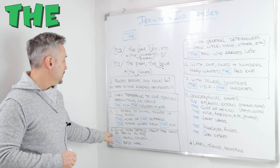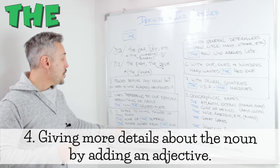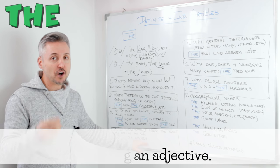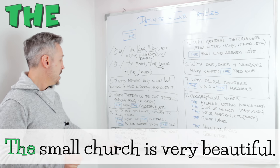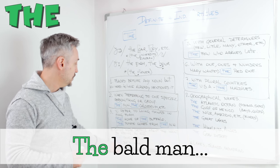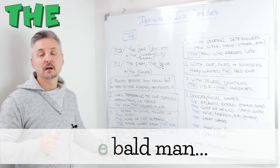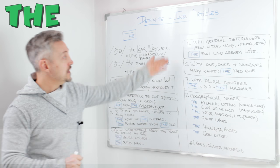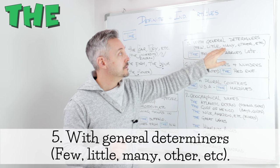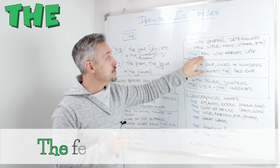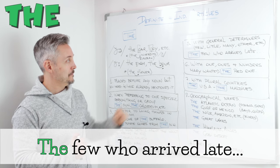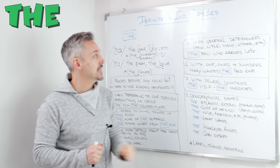For the fourth rule: giving more details about the noun by adding an adjective. 'The small church in Rome is very beautiful.' 'The bald man just fell off the ladder', for example. 'Bald' and 'small' are adjectives. The fifth rule is with general determiners — few, little, many, other, etc. 'The few who arrived late got a bad mark.' So we use 'the' before few, little, many, other.